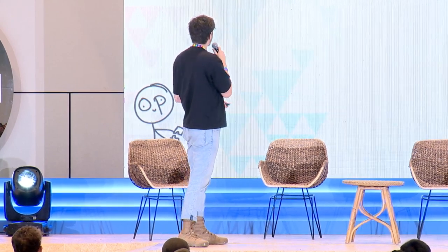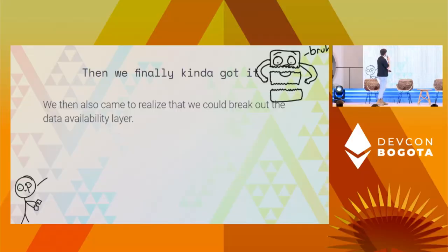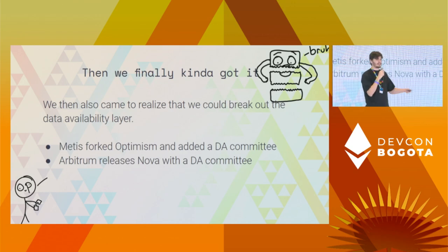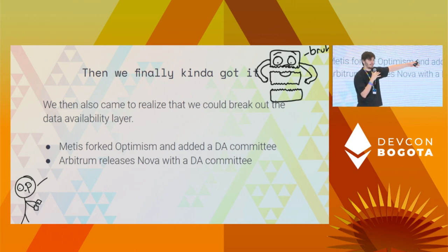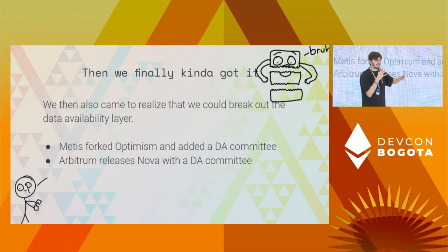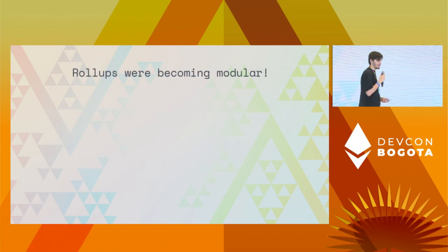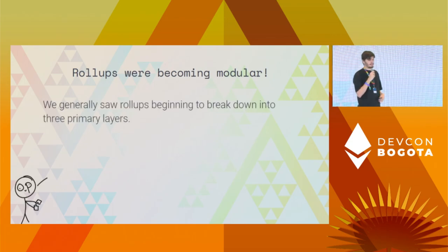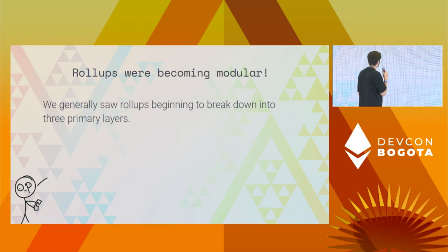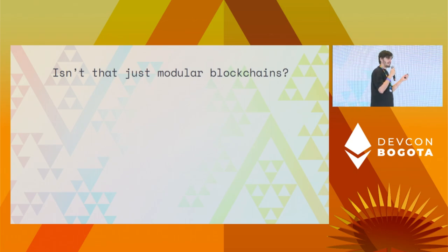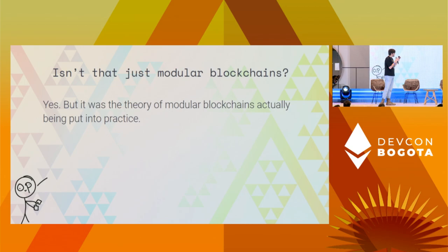Then we also came to realize we could break out the data availability layer. Optimism added a data availability committee, Arbitrum released Nova with a data availability committee — all a realization that we can separate data availability. We can include something other than Ethereum and these systems can still work with different security properties. Rollups were becoming modular. We generally started to see rollups breaking down into three primary layers: consensus, execution, and settlement. It's about taking the theory of modular blockchains and putting it into practice — actually defining a software stack so the average person doesn't have to build the whole thing from scratch.